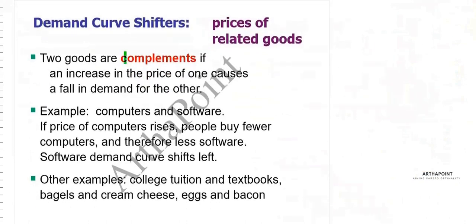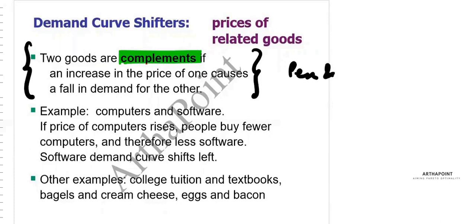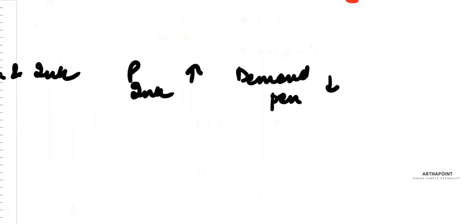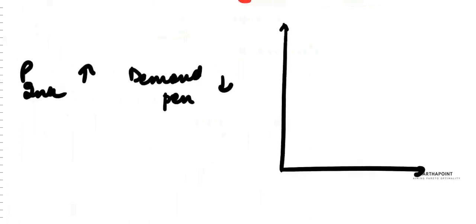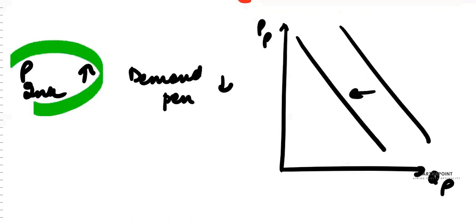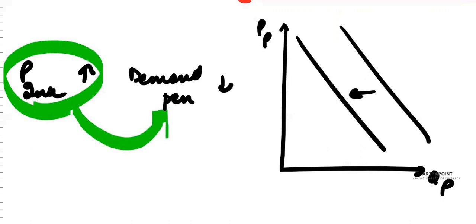The other kind of goods are called complement goods — goods which are used together, like pen and ink. When the price of ink increases, because ink has become expensive and ink is used in a pen, people will demand less of pen also. The demand of pen will decrease, so in the pen market the demand curve is going to shift backward.